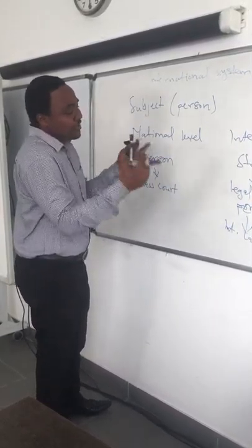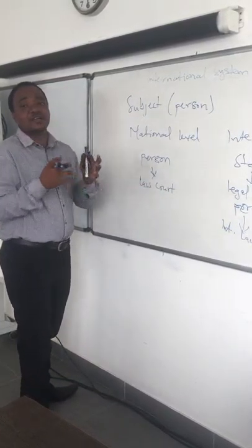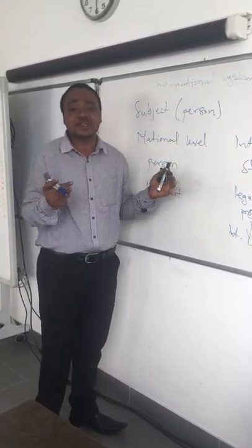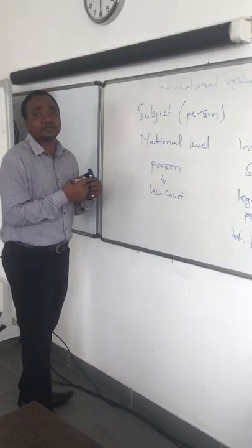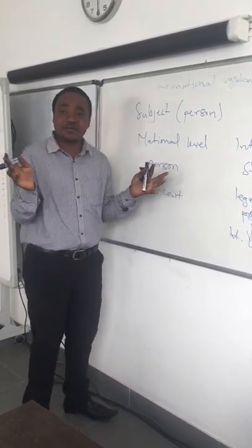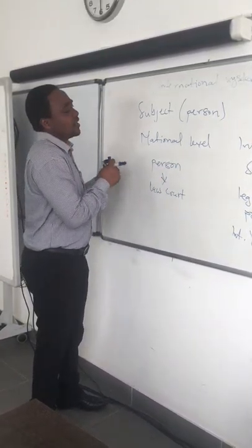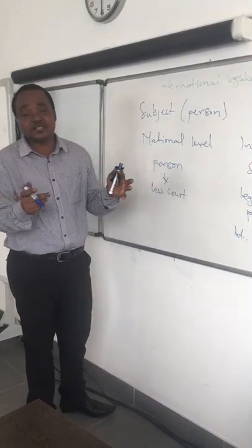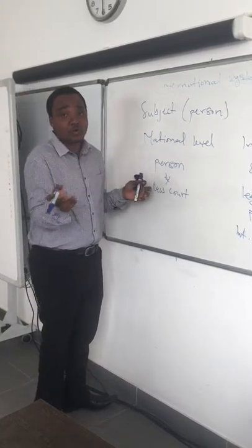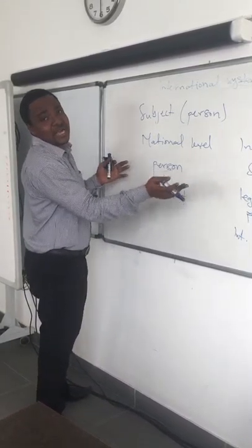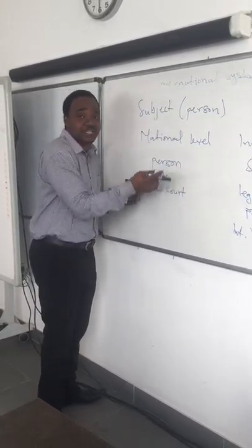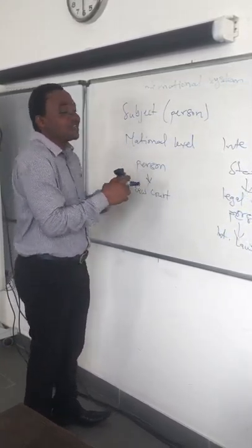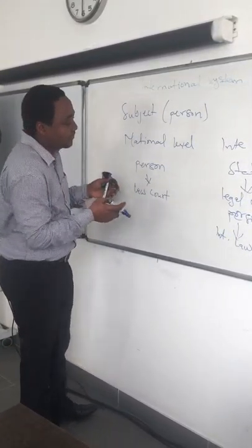Going forward, we will be discussing states having big powers within the international system — that is, hegemonic power states. We will also be talking about the sources of international law, including treaties, conventions, customary laws, and other legal issues regarding the international system. It is going to be a continuous process as we share the knowledge we have acquired.